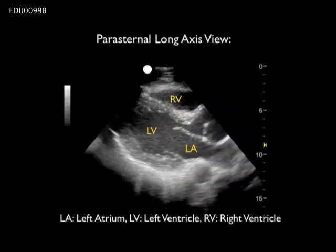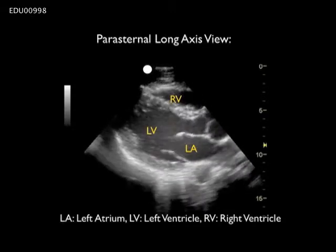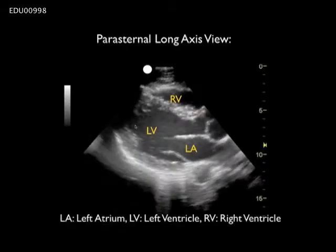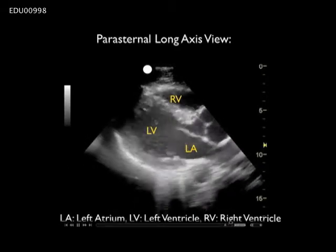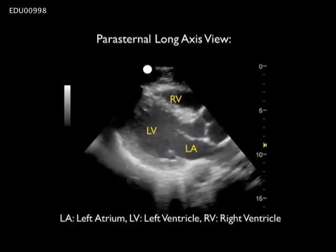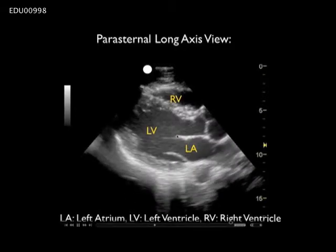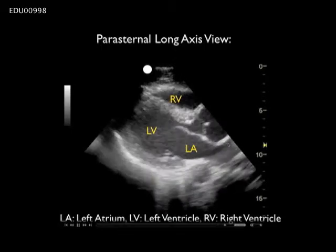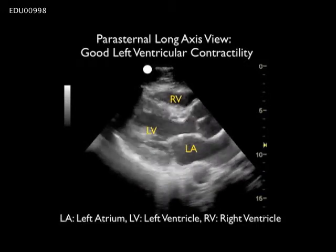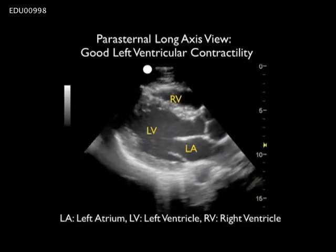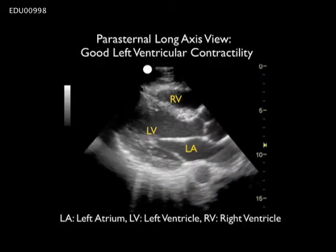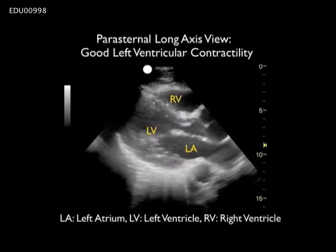The next step in pump evaluation is to determine contractility of the left ventricle. Here we see the three main chambers from the parasternal long axis view: the right ventricle, left atrium, and left ventricle. Notice that during systole the endocardial walls of this left ventricle almost close down completely, indicating excellent contractility. We can also see that the anterior leaflet of the mitral valve flips open and almost slaps up against the septum with each heartbeat, again indicating good contractility. If this patient was hypotensive, we could give quite a lot of fluid before causing pulmonary edema.